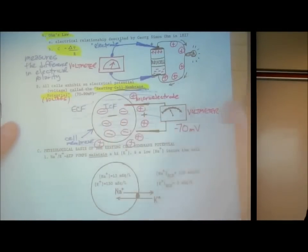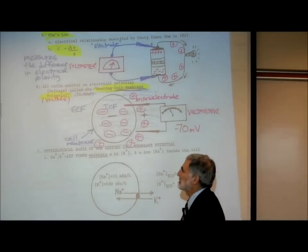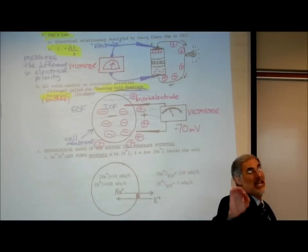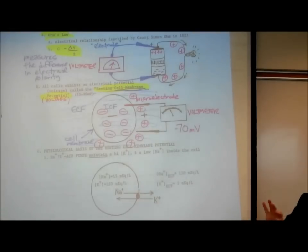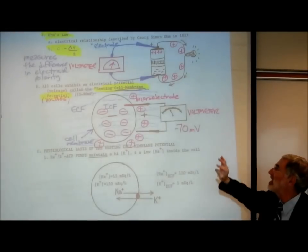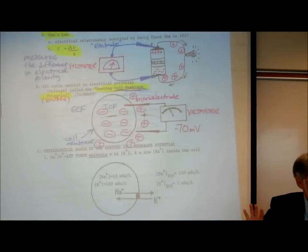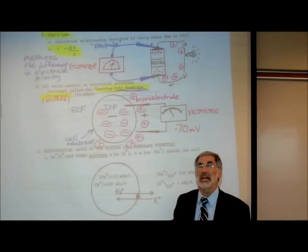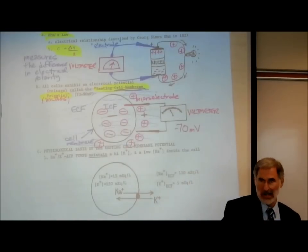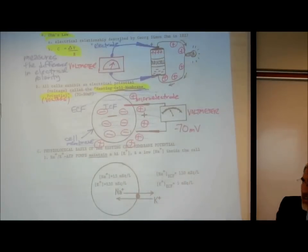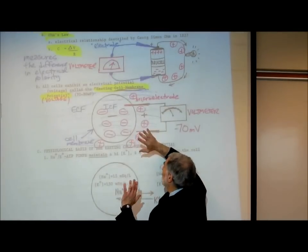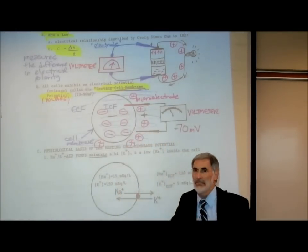Why do they say 'resting'? Because in some cells — specifically excitable cells like nerve and muscle — this voltage can change. In non-excitable cells it doesn't change; it stays constant. But in excitable nerve and muscle cells, it can change. So this is called the resting cell membrane potential, and we'll learn what happens when it changes in an excitable cell.